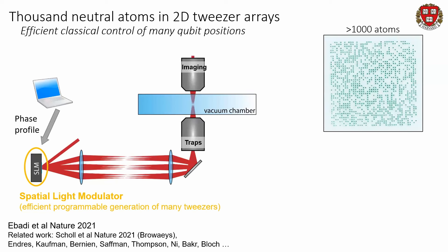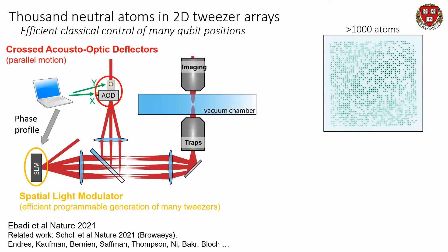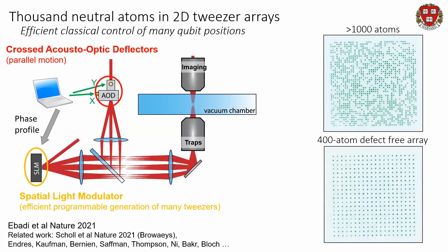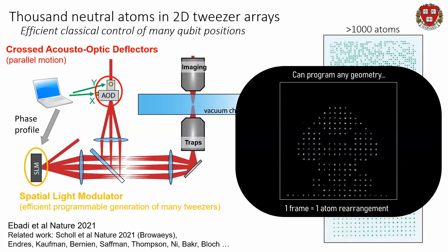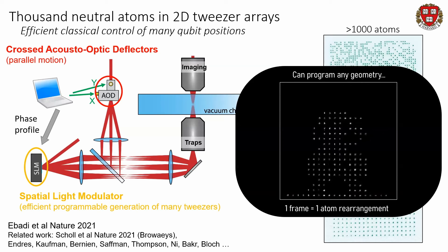This is a real fluorescence image of the atoms. We stochastically load the atoms into this tweezer array. Then we add another set of tweezers using an acousto-optic deflector, which creates programmable grids of light that can be quickly dynamically steered in real time using only two voltage waveforms. Just by using two voltage waveforms and optical beam parallelism, we steer these beams of light and sort a thousand atoms into a 400-atom defect-free configuration. We can make square grids or many different types of configurations — this shows the extreme programmability over atomic positions you have just by using these simple optical tools.